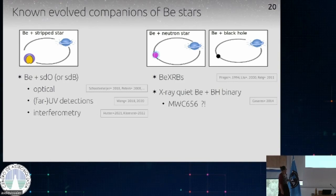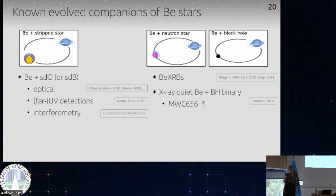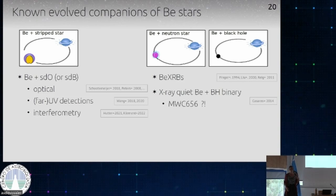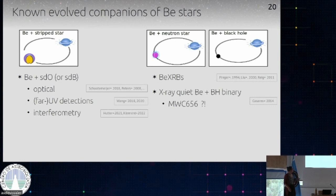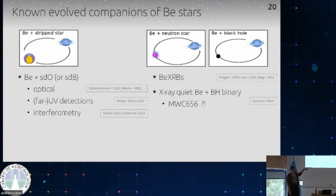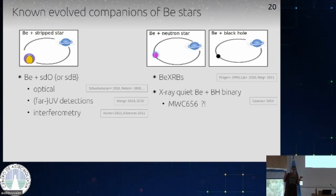Another group of BE stars in binaries that we know are BE X-ray binaries — systems where a BE star and a compact object interact, with the compact object periodically plunging through the disk of the BE star and producing X-rays. There's a large catalog of these, not only in the galaxy but also in the SMC and LMC. And then there was one peculiar system called MWC-656, which for a long time was thought to be an X-ray quiet version of such a system — with a compact object and a BE star, proposed to be an X-ray quiet BE binary with a black hole companion.